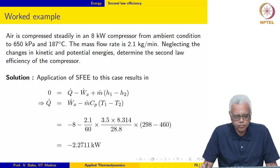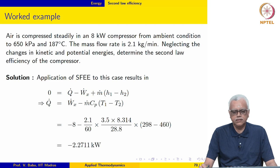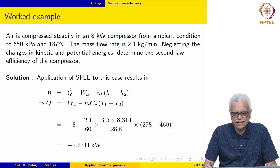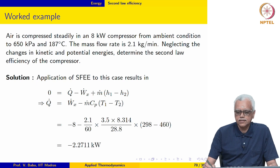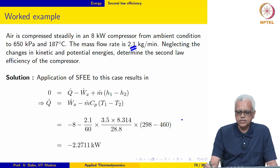The next three examples we are going to look at are all steady flow applications, and the last example involves a heat engine executing a cyclic process. The first example reads: air is compressed steadily in an 8 kilowatt compressor from ambient condition to 650 kPa and 187 degrees Celsius. The mass flow rate is given to be 2.1 kg per minute. Neglecting changes in kinetic and potential energies, determine the second law efficiency of the compressor.